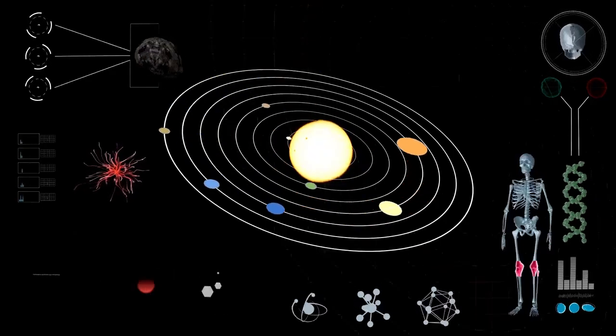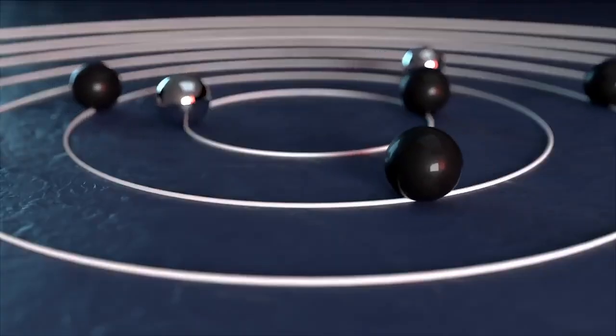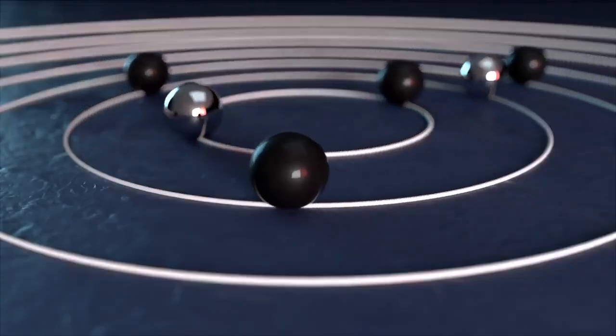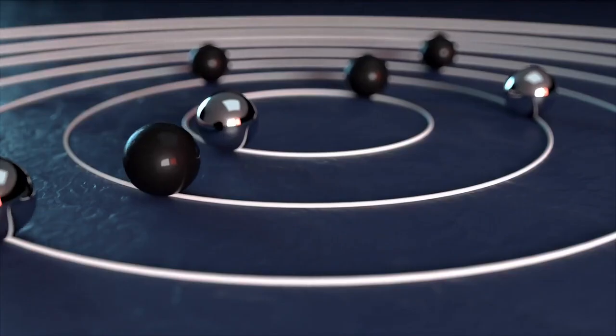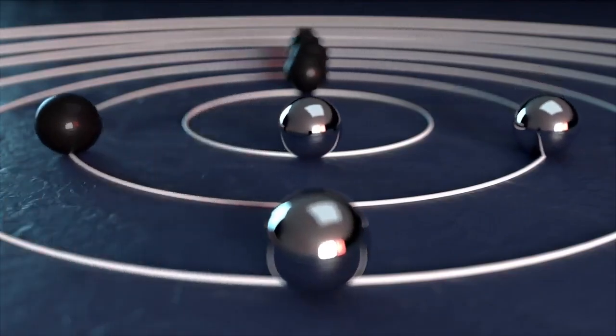Despite launching second, Voyager 1 was the first to reach Jupiter and Saturn, focusing on these planets while Voyager 2 explored Jupiter, Saturn, Uranus, and Neptune.